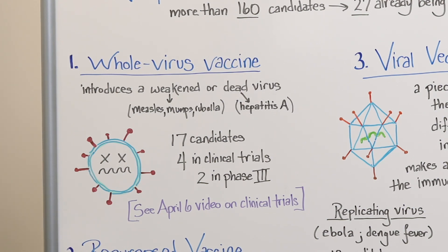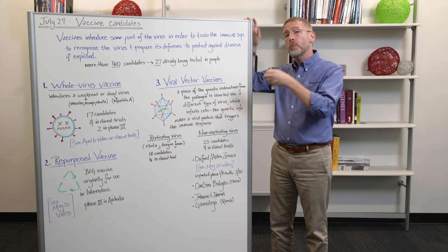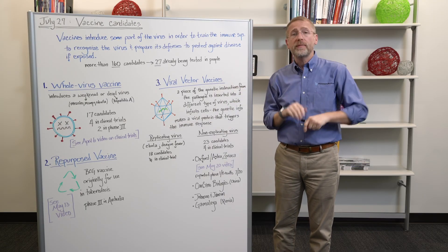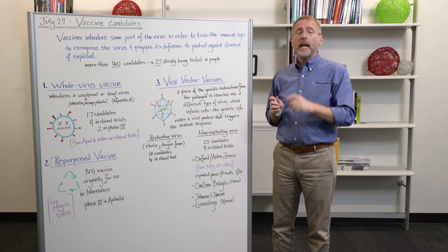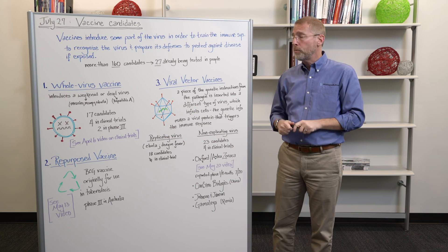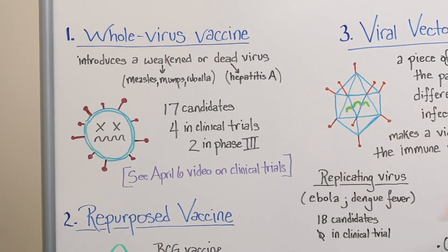So there are 17 candidates under this category. Four of them are in clinical trials. And two of them have actually progressed all the way to phase three. Remember, phase three is the broadest category. You're looking at thousands or tens of thousands of individuals. If you want to remind yourself of the format and the flow of the clinical trial process, take a look at our April 6th video and that'll refresh your memory.